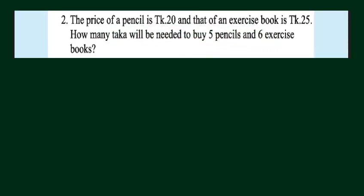The second word problem: the price of one pencil is 20 taka, and the price of one exercise book is 25 taka. We have to find out how many taka will be needed to buy five pencils and six exercise books.